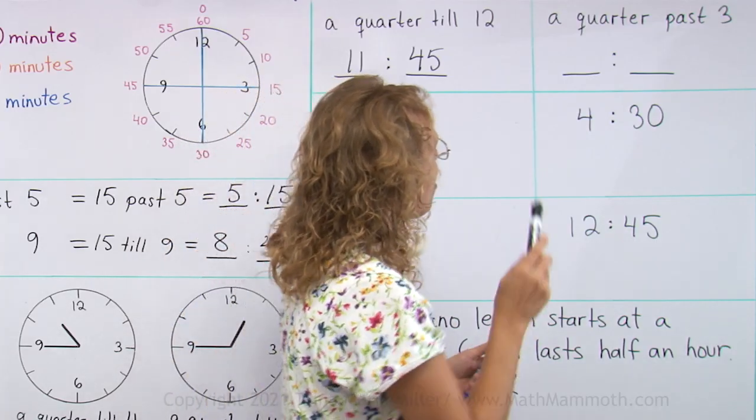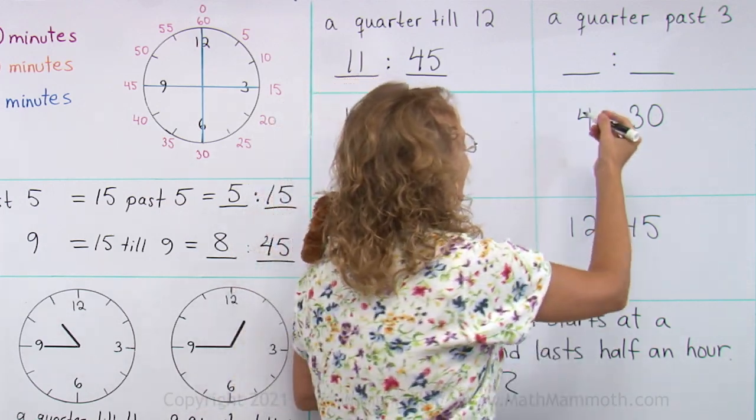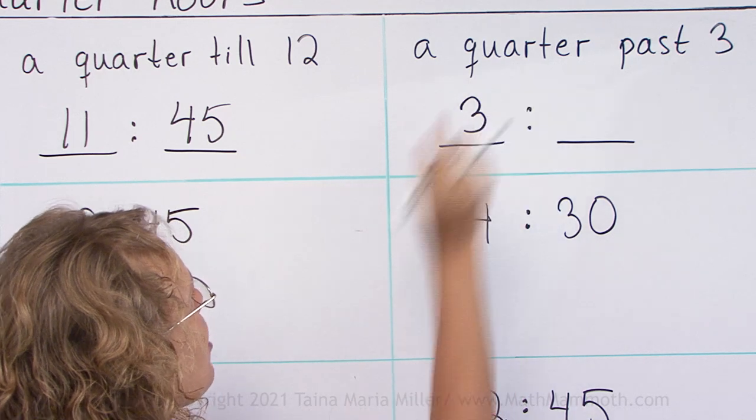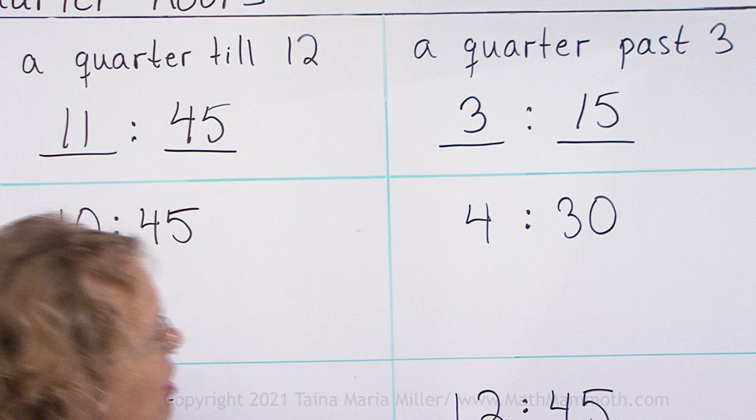How about this one? A quarter past three. That's actually easier. We have three hours. And then quarter means 15 minutes. Fifteen minutes past three or 3:15.